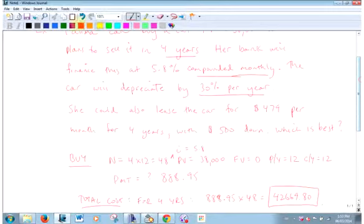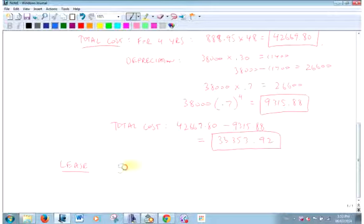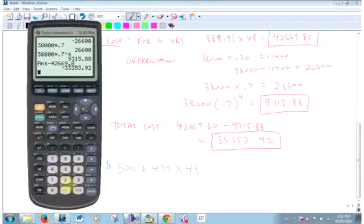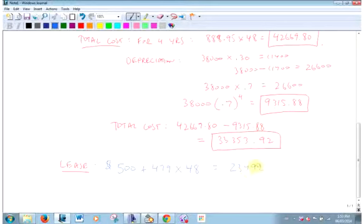How much is the lease going to cost? $479 a month, $500 down. So it's going to cost me 500 bucks boom right off the bat, and then every month $479. So $500 and $479, how many months? Four years, I'm paying it monthly. So add that up. $500 and $479 times 48, not 448. $23,492.